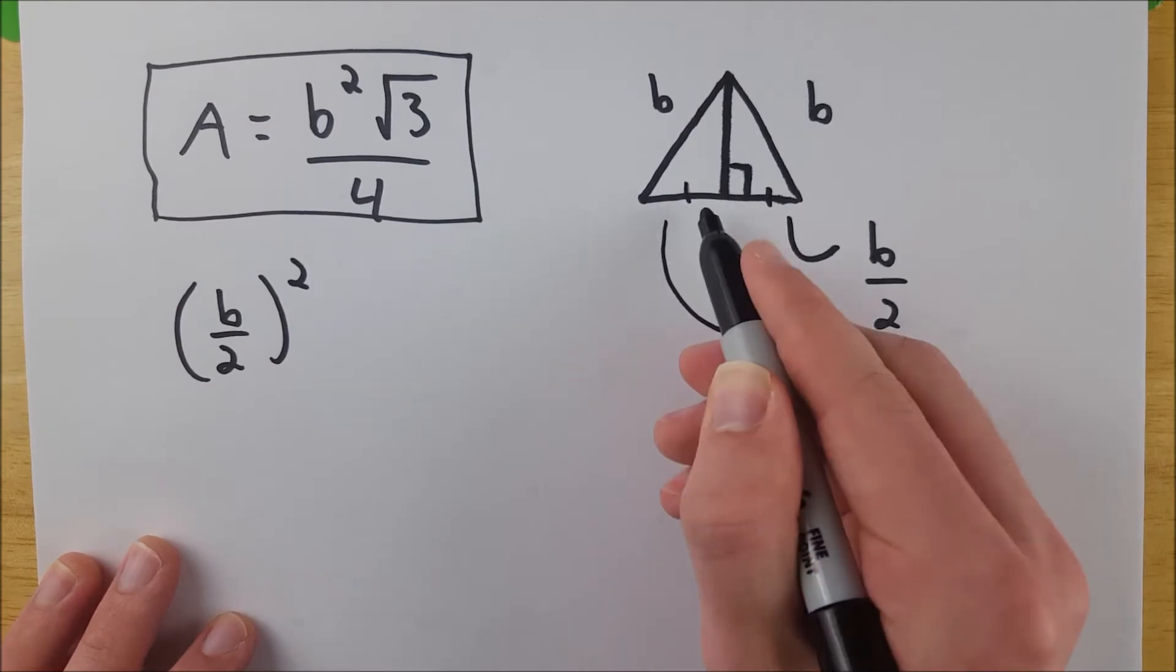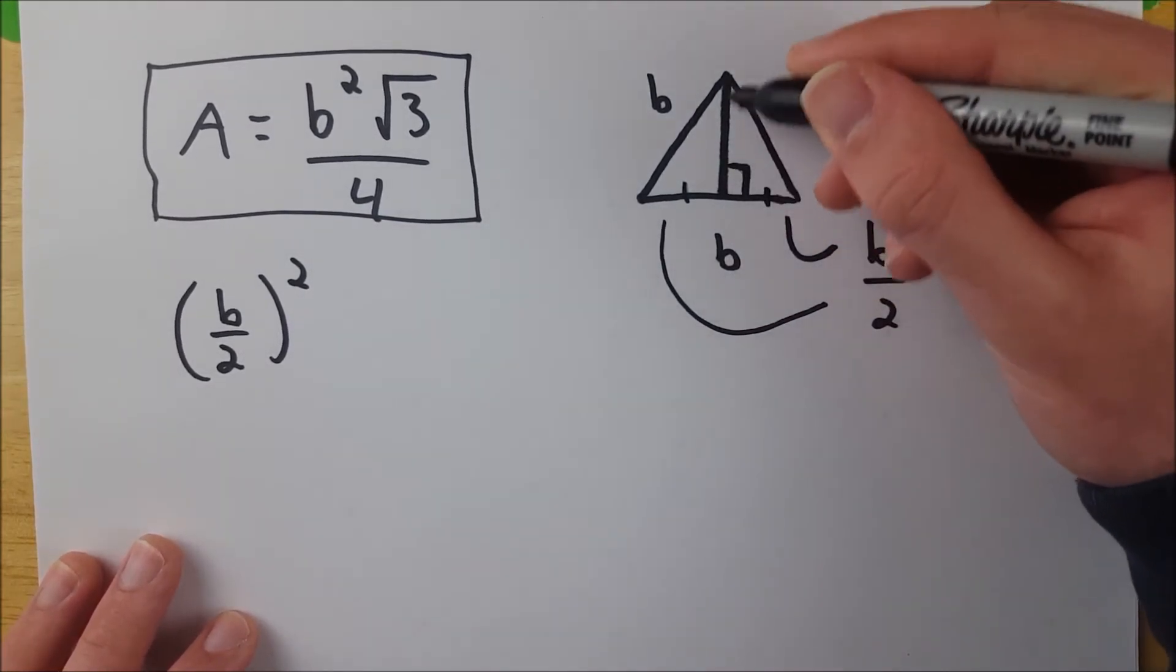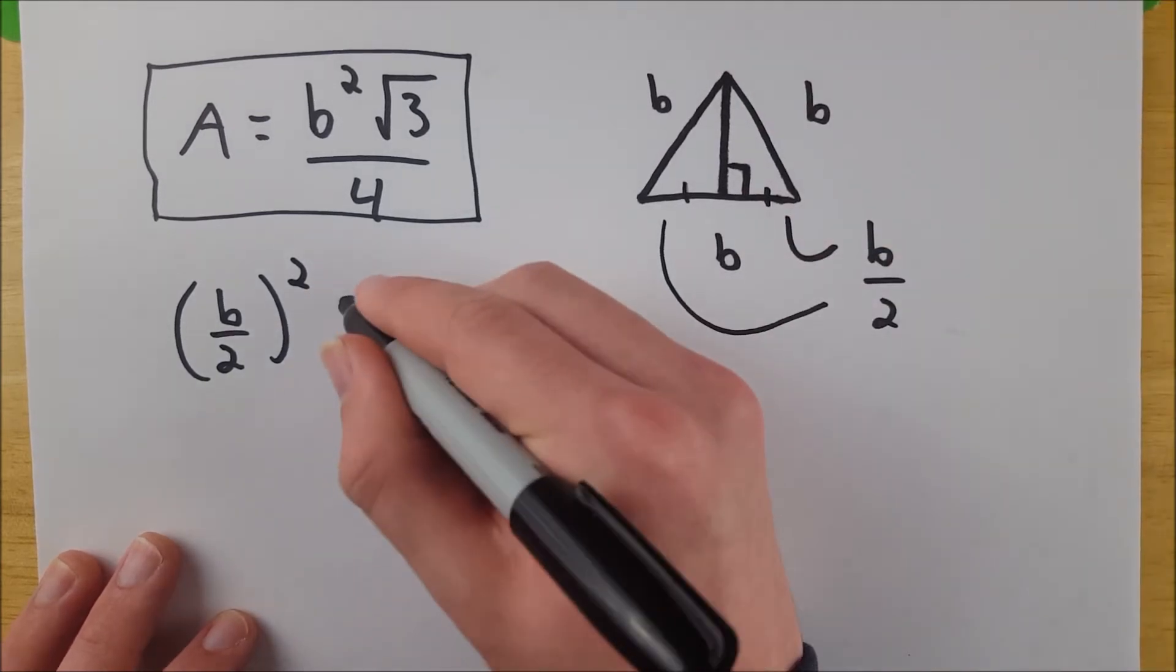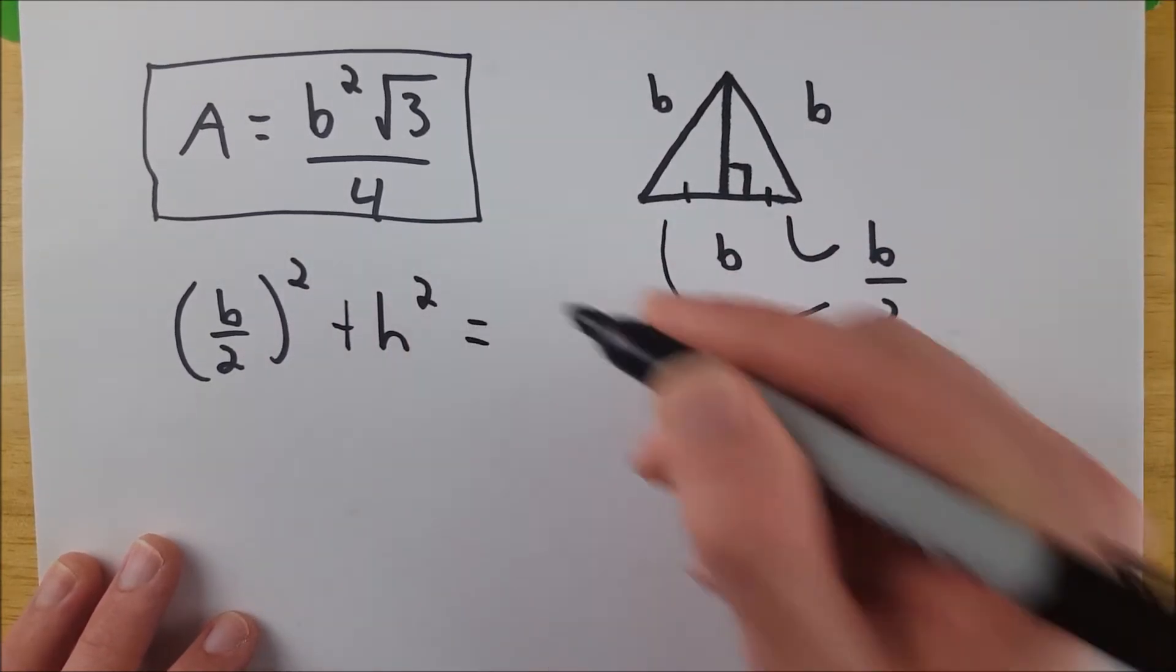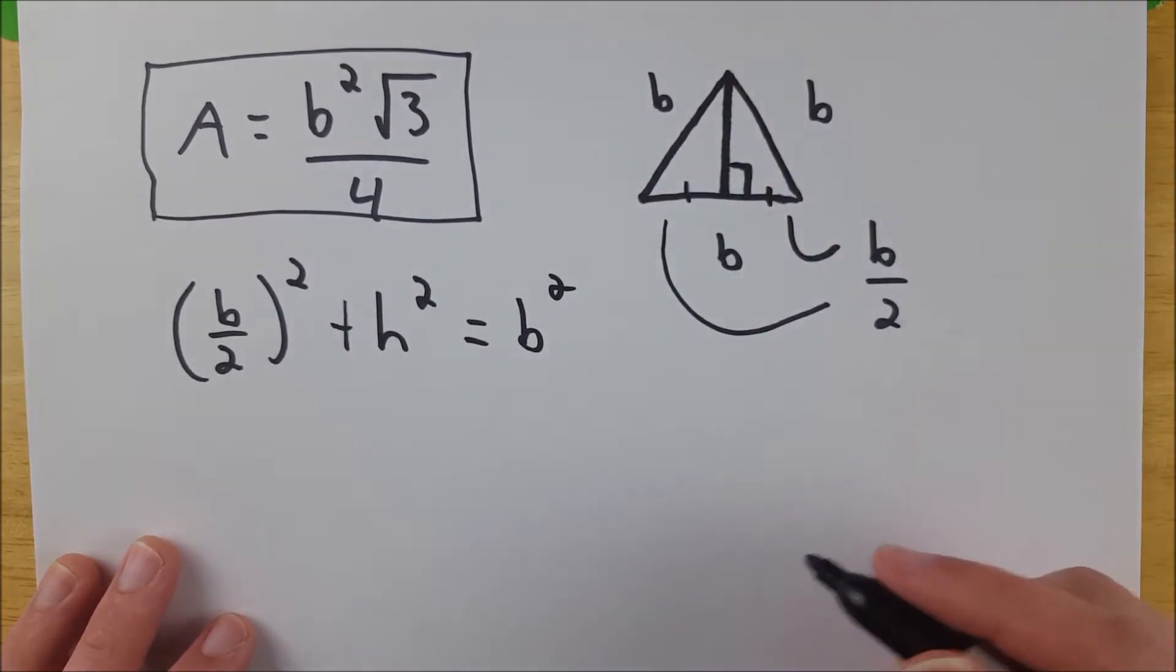That's the length of this leg squared, or this one, doesn't really matter which, plus this length squared. That's our height. So that's plus h squared. And that gets set equal to b squared, which is the square of the hypotenuse.